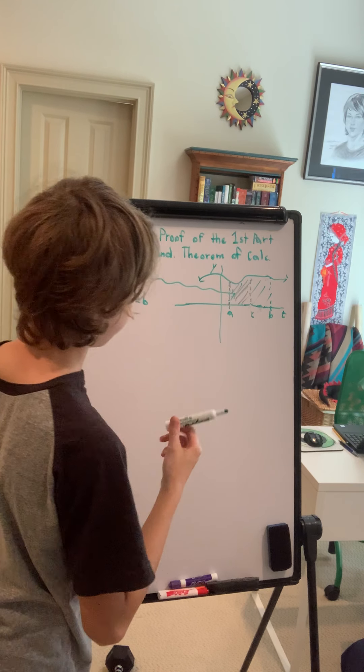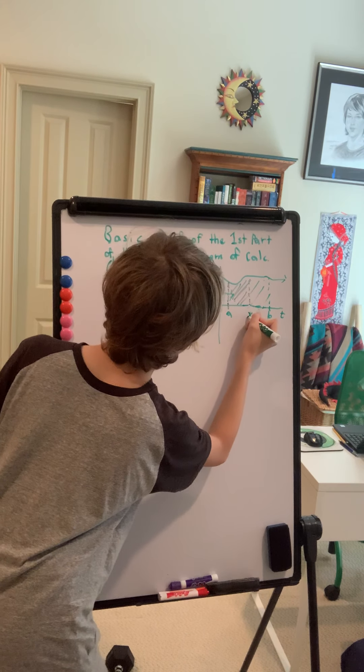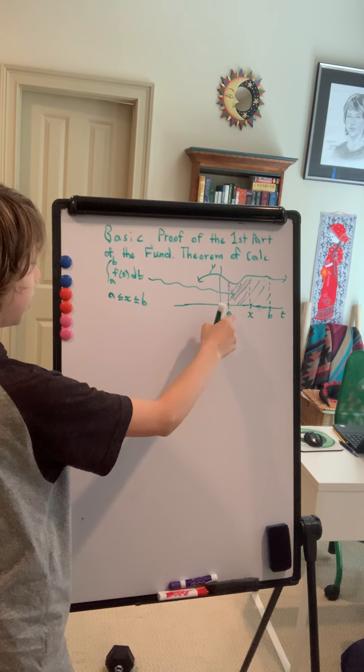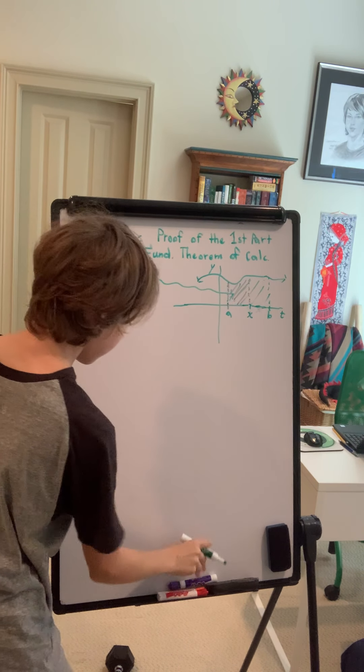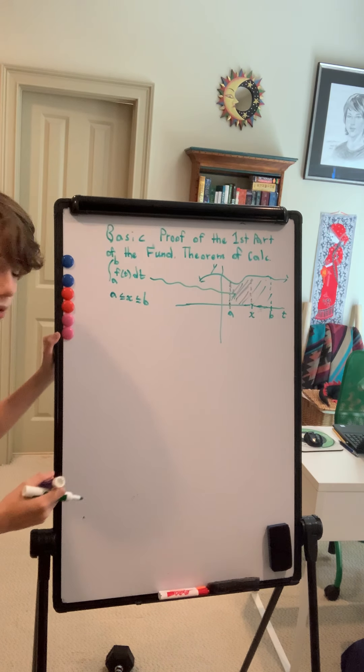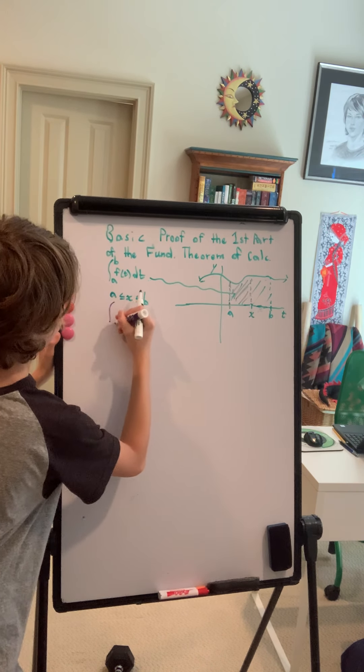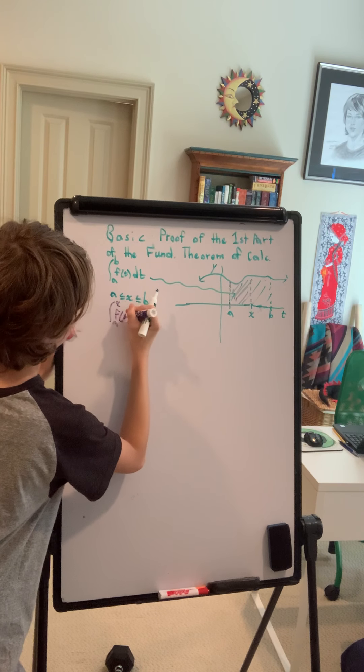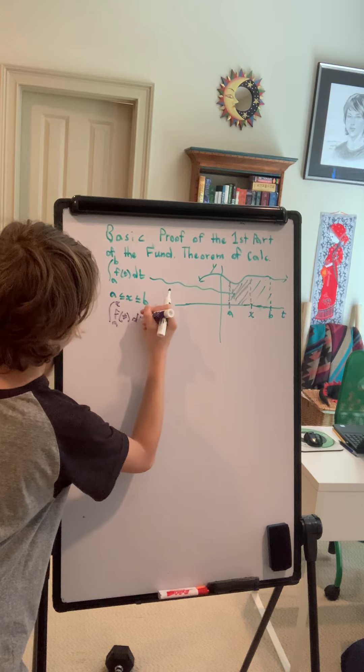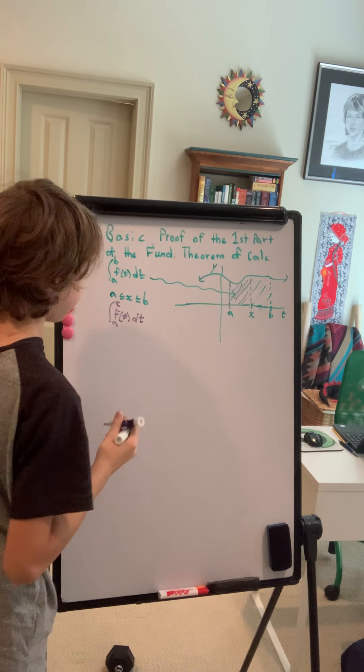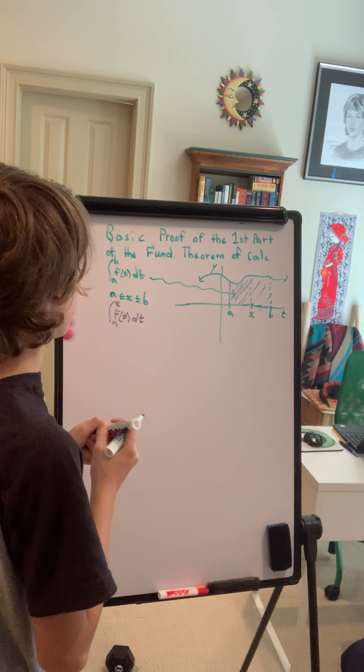The reason I'm not going to use my purple marker as much is because it's kind of dry. So that would be the, oh, I accidentally erased our x here. So that would be our area from A to x. So we can write it, hopefully this will work, from A to x of f of t dt. Same thing, I'm not going to draw an arrow because I color coded it.